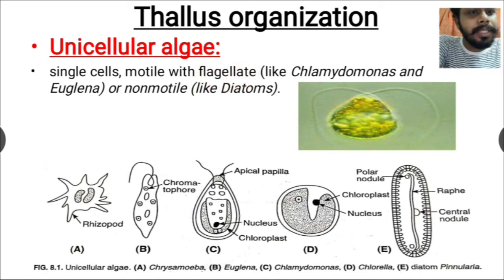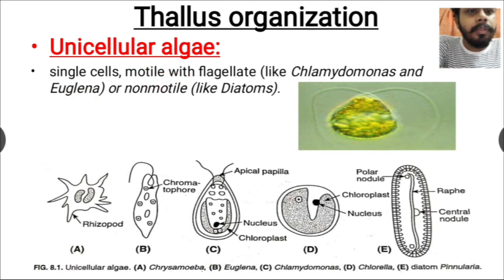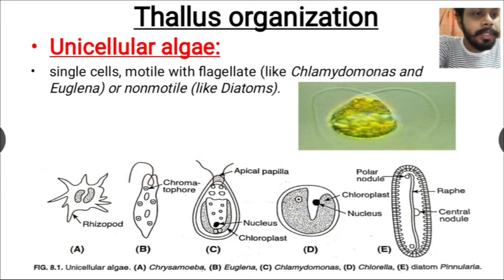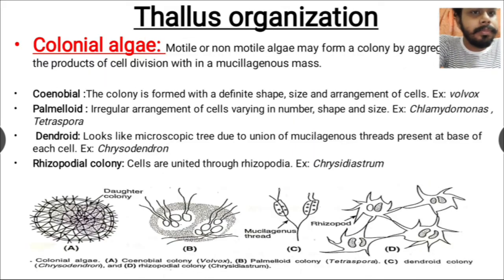Unicellular algae are either motile with flagella or non-motile without flagella. Motile forms like Chlamydomonas and Euglena have a flagella by which they can move from one place to another. Non-motile unicellular algae like diatoms don't have any flagella. Here we can see the Euglena structure and Chlamydomonas, which have flagella for movement, while diatoms are non-motile.